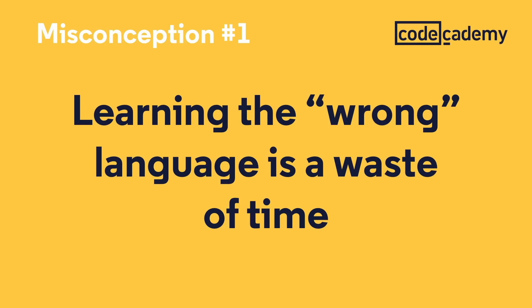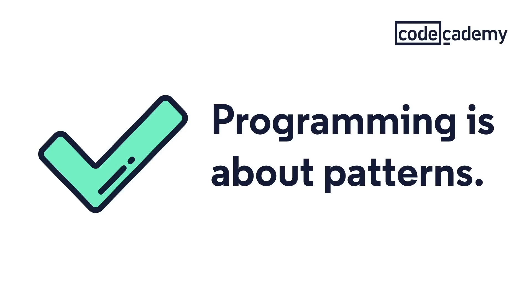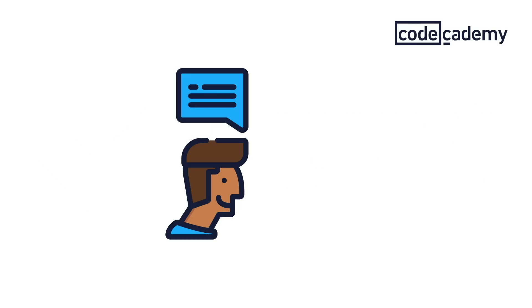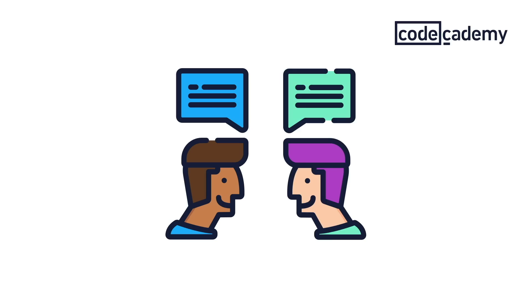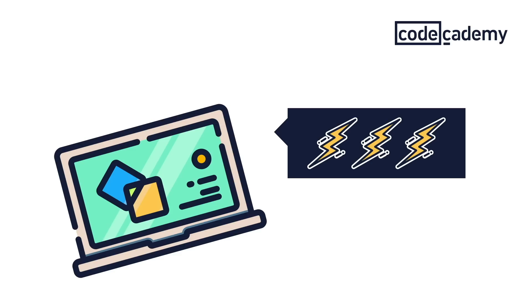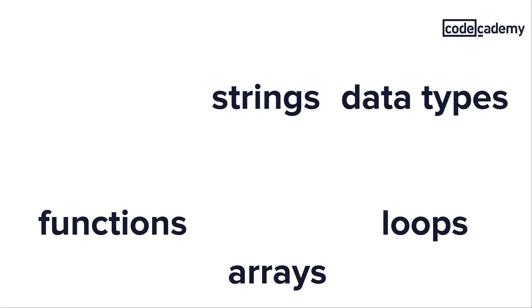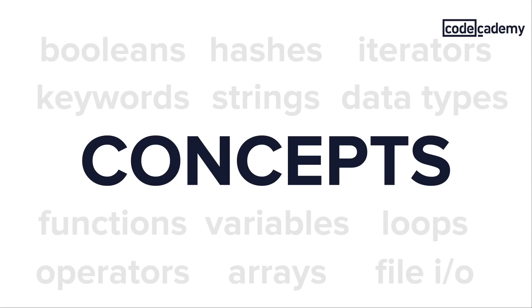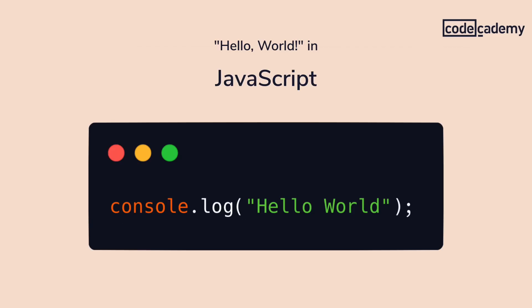Before getting too deep, let me clear up some misconceptions. Misconception number one: learning the wrong language is a waste of time. The truth is that programming is about patterns. Many people think coding languages are like human languages — if you pick the wrong one, you're wasting your time, like learning Chinese when you want to move to Germany. That's not really the case with programming. Programming languages might look different on the surface, but they usually have a lot in common, in part because they share some ancestry. All programming languages are trying to be efficient, cause as few bugs as possible, and execute the same set of instructions. You start to see the same patterns and structures, so it's easier to pick up others.